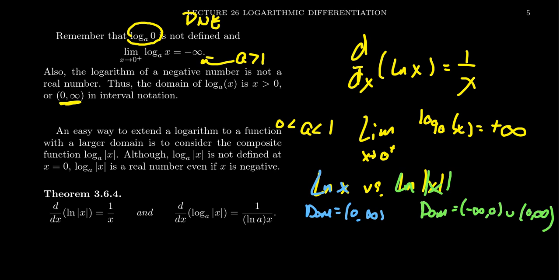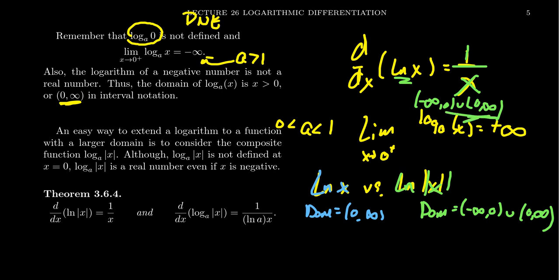Why is that so significant? Consider the function 1 over x. Its domain, by convention, is negative infinity to zero union zero to infinity — we can't have x equals zero because that would be division by zero. When it comes to a function and its derivative, the derivative's domain can never be larger than the original function, because the derivative is only defined where tangent lines are defined. So when you take the derivative of the natural log, even though the formula is 1 over x, its domain would normally have to be positive x. But if we want to get the full breadth of its domain, we could potentially extend the natural log's domain as well.